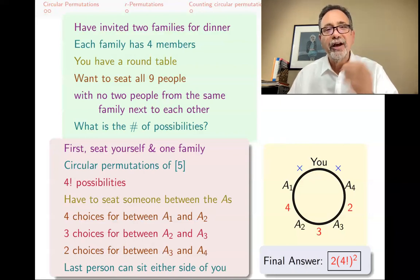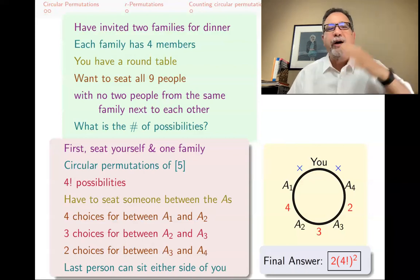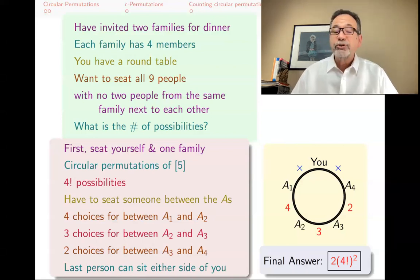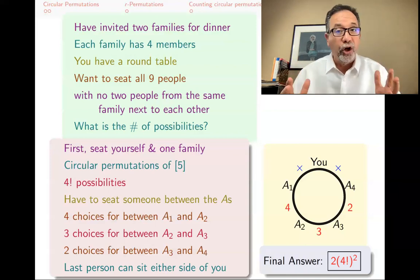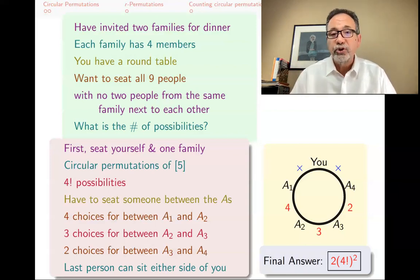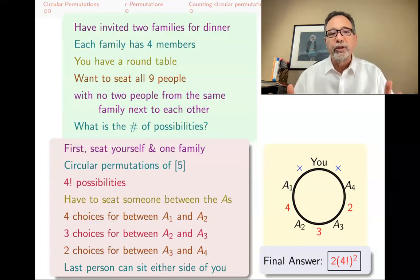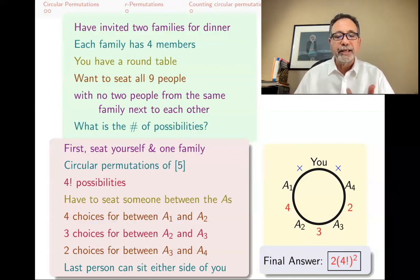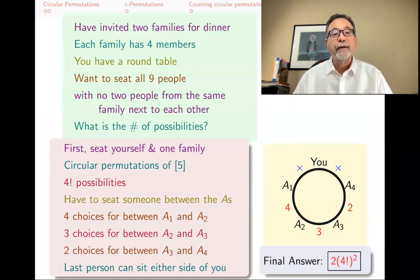In all counting combinatorial problems, there are usually many ways of doing it correctly — and even more ways of doing it wrong. I urge you to try to argue this differently. There are many different ways of approaching it, but the answer is 2 times 4 factorial squared.